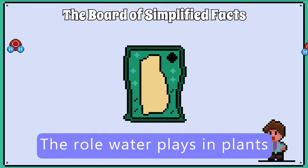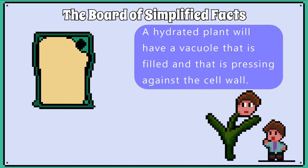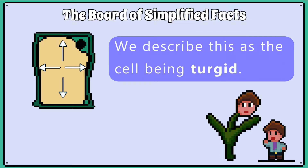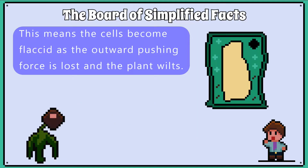In the cells topic, we covered the role water plays in supporting the plant's cell structure. A hydrated plant will have a vacuole that is filled and pressing against the cell wall — we describe this as the cell being turgid. If the plant is not watered, eventually the vacuole will start to shrivel up, meaning the cell becomes flaccid as the outward pushing force is lost and the plant wilts.